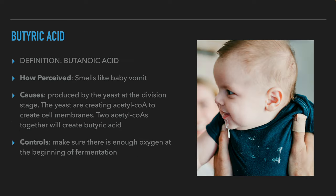The next off flavor is a rather rare one, butyric acid. It smells like baby vomit. Butyric acid is an acid that is formed during the yeast growth phase as part of the cells creating new cell membranes. If there is not enough oxygen available for the yeast, they will be unable to complete the creation of sterols and butyric acid will be left in the beer. To avoid leftover butyric acid after fermentation, the brewers should make sure that there is sufficient oxygen at the first stage of fermentation.